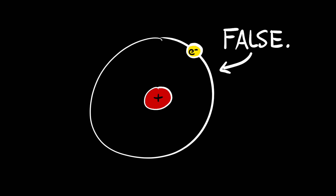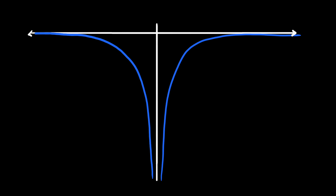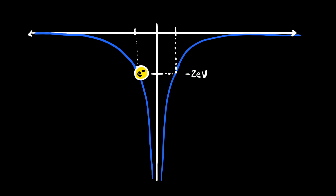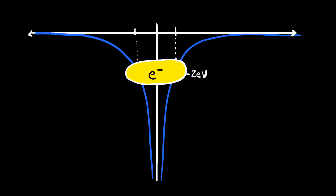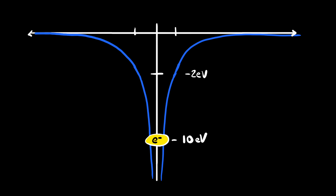Next, electrons don't orbit around the nucleus. According to our potential energy graph, an electron at a particular energy level — say negative two — would theoretically exist at one of two positions. Early scientists assumed the electron orbited or oscillated around the nucleus. In reality, the electron isn't moving like this — it just exists at all times in that general area. An electron at a higher energy level will generally exist further from the nucleus than one at a lower energy level.